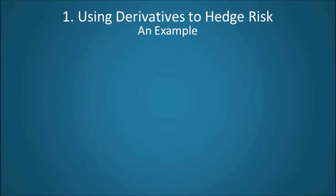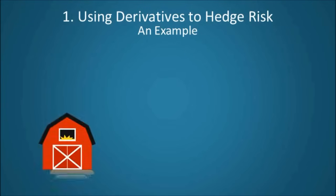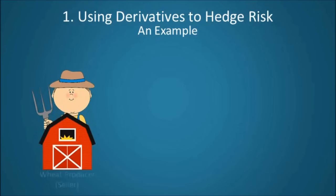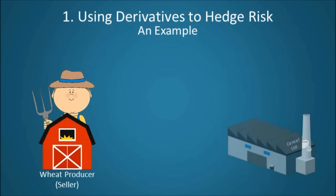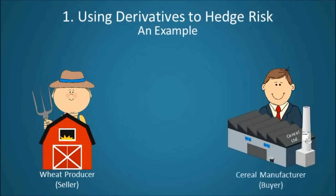In order to demonstrate how a derivative can be used to hedge risk, consider the example of wheat producers and cereal manufacturers hedging their exposure to fluctuations in wheat prices. As we know, wheat is susceptible to significant fluctuations in price, owing to both supply and demand.